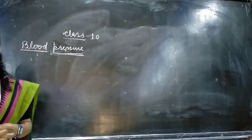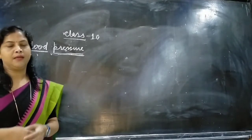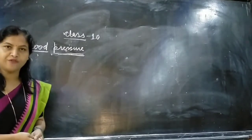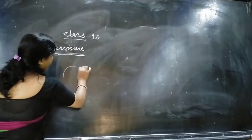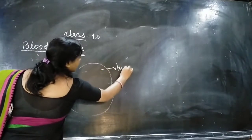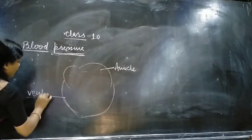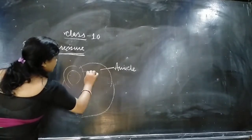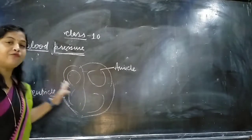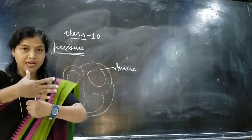Why does it happen? It happens during the ventricular contraction. As I have already explained in the circulatory system when discussing the structure and function of the heart — the upper part is known as the auricle, the lower part is called the ventricle, and the heart has four chambers. The movement of the heart is like rhythmic contraction.